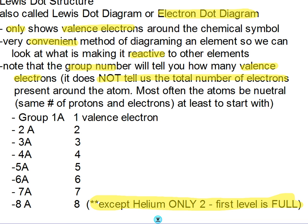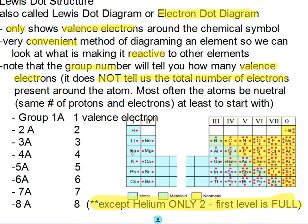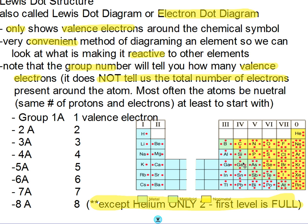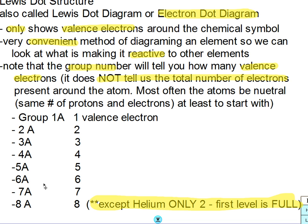A Lewis dot diagram is also called an electron dot diagram — you'll see these terms used interchangeably. It shows only the valence electrons around the symbol, not all of them. It's very convenient for looking at reactivity of our elements. Note that the group number tells us the number of valence electrons, not the total number of electrons. Group 1A has one valence electron, 2A has two, 3A has three, 4A has four, and so on — except helium, which is in group 8A but only has two valence electrons.